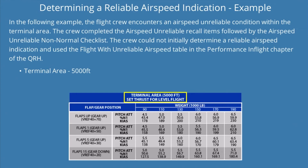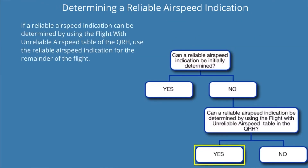In the following example, the flight crew encounters an airspeed unreliable condition within the terminal area. The crew completed the airspeed unreliable recall items followed by the non-normal checklist but could not initially determine a reliable airspeed indication. Using the flight with unreliable airspeed table at 5,000 feet, flaps up, gear up, and a current weight of 150,000 pounds, the crew determined that setting 6 degrees pitch attitude and 53.8% N1 should result in an airspeed of approximately 210 knots.